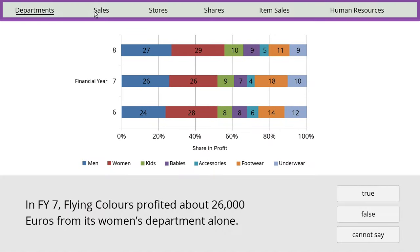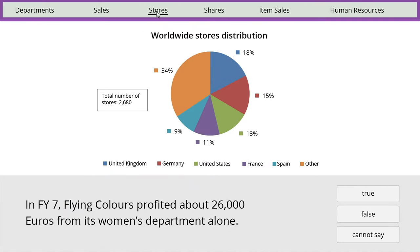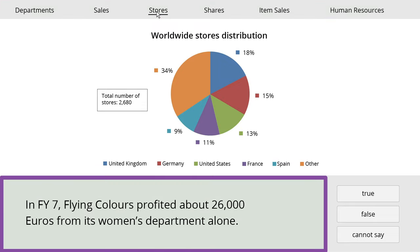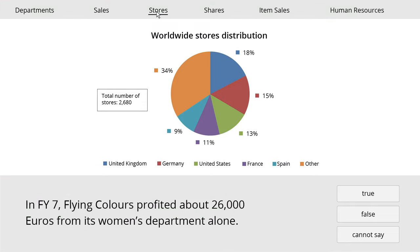The numerical test is based on six tabs, each containing a graph or a table. Below the tabs is a single statement. Your job is to decide, based on the data, whether the statement is true, false or cannot say. What does that mean precisely?